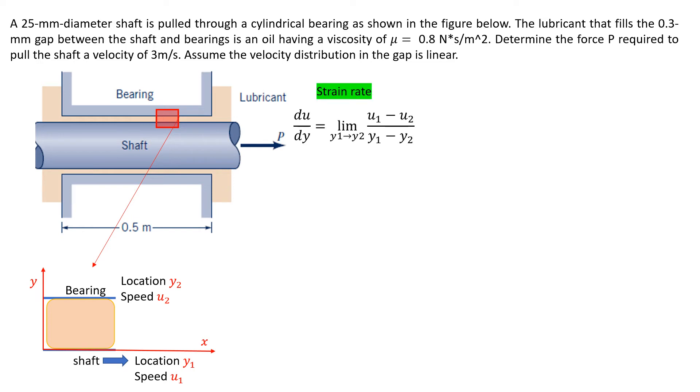To calculate the strain rate, we apply the differentiation form du/dy. We know that when y₁ is close to y₂, du/dy will be (u₁ - u₂)/(y₁ - y₂). For our case, the 0.3 millimeter gap meets this requirement, so we can use the right side to calculate the strain rate.